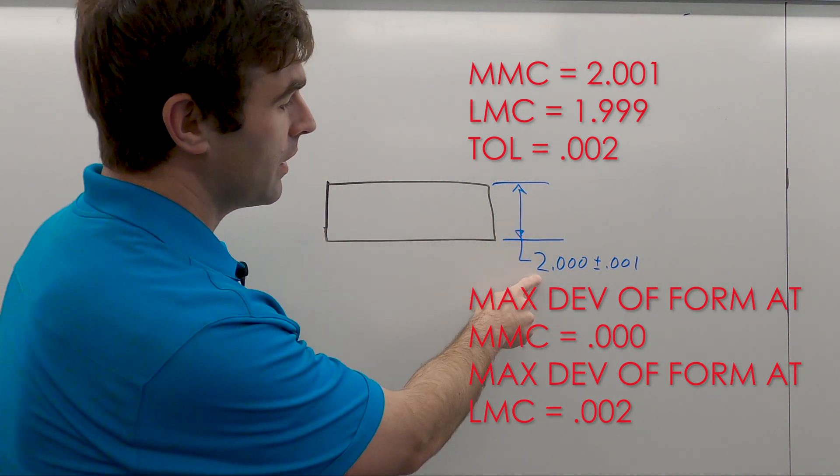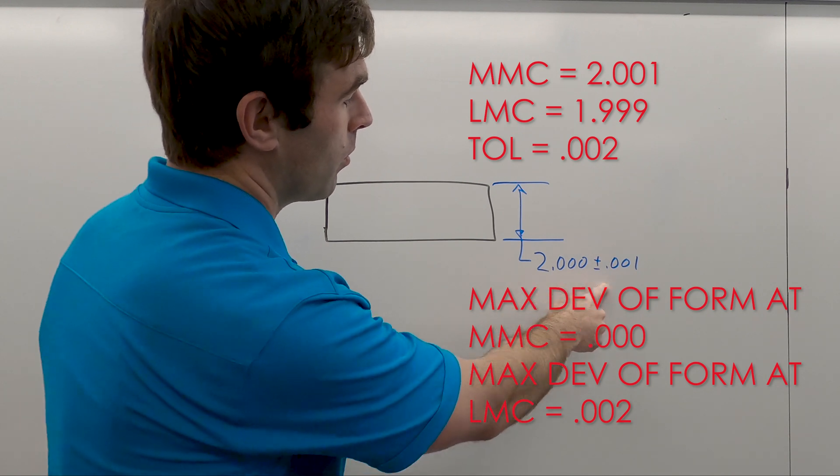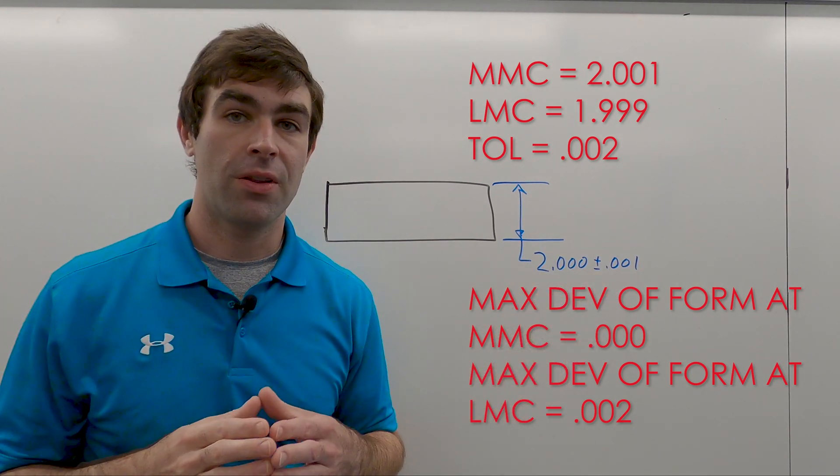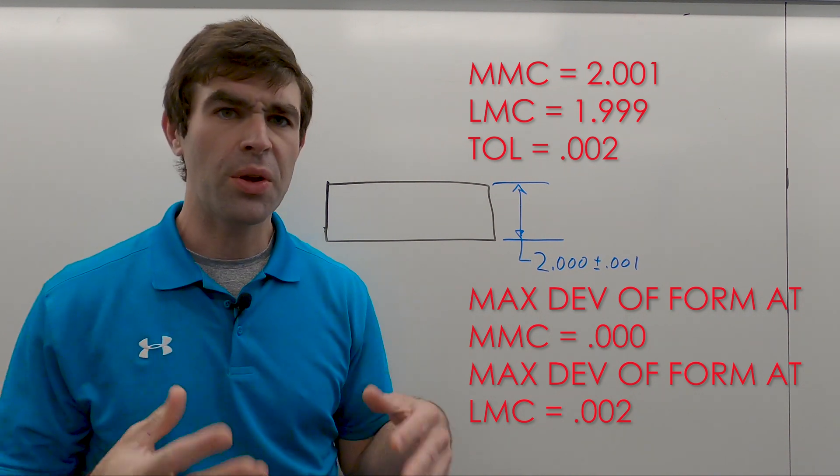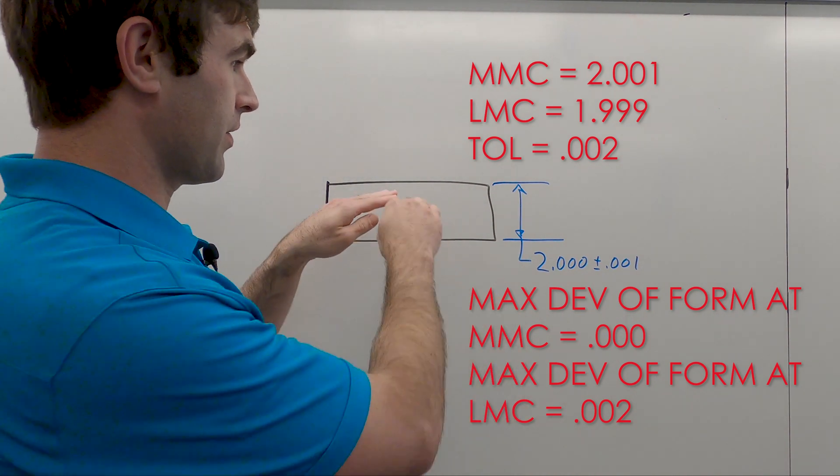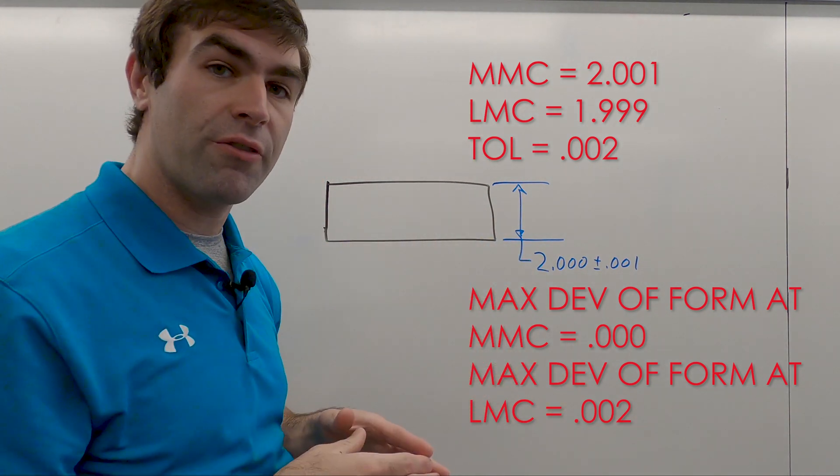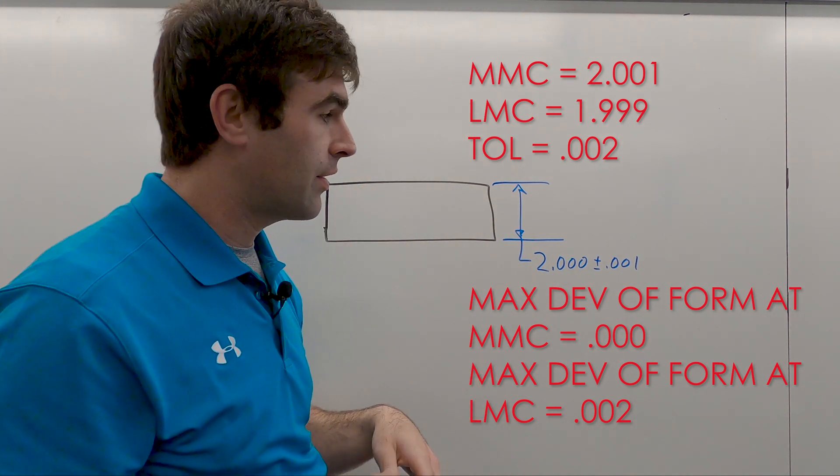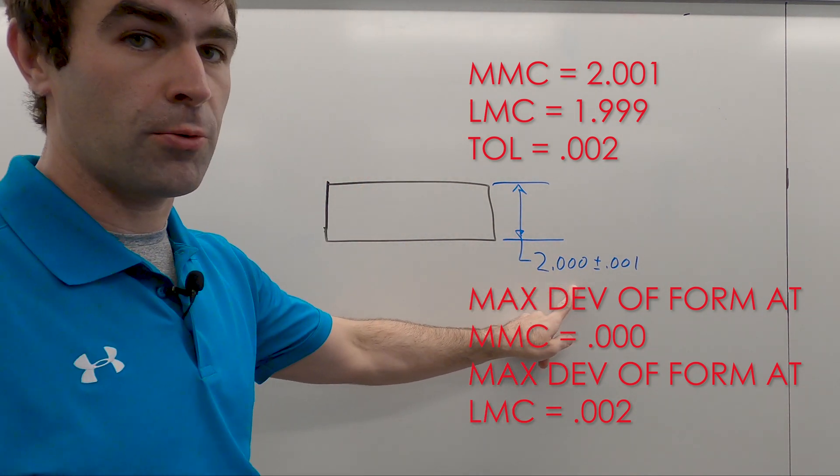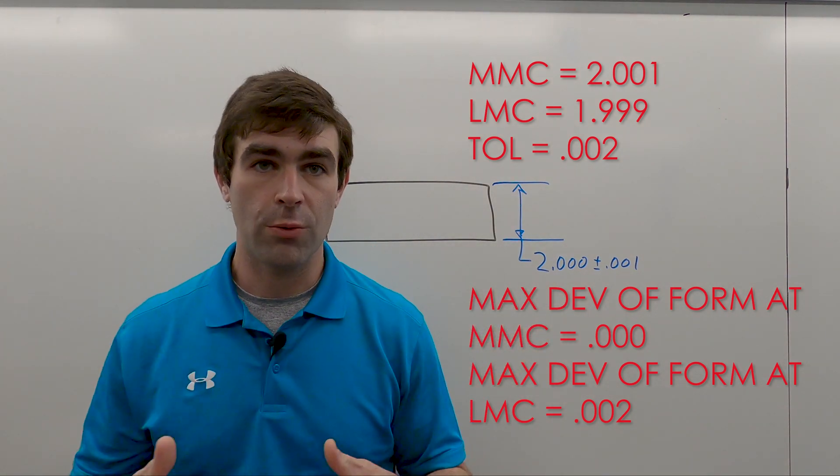That's 2.001—it cannot be bigger than that and it has to meet that form. So you can test this by just making something this size, making sure it'll fit, and then making sure none of the points on it are less than the LMC, which would be 1.999. Small tolerances and doable.